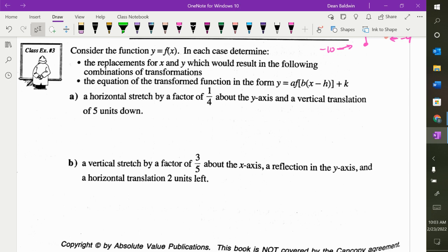So we do a horizontal stretch by a factor of a quarter. Is that A, B, H, or K? That's a B value. Factor of a quarter means that's what we multiply by, so our B value is four. We do a vertical translation of five units down, so that is K, negative five. If I don't say anything about H or A, we just leave them. The equation will be f of four X minus five.